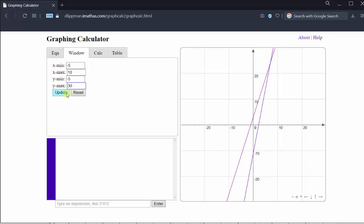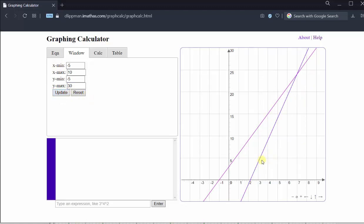Click Update. To get the new window, let's go ahead and use this window and now determine the point of intersection. To do this, click on the Calculate tab, click the dropdown menu under Mode, and click Intersection. And now we draw a box around the intersection.